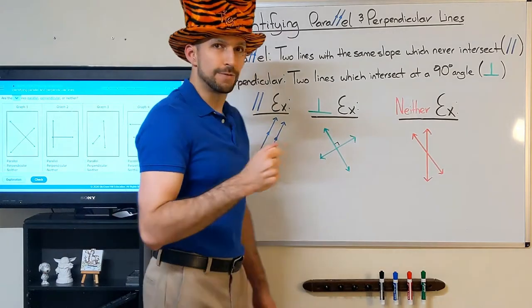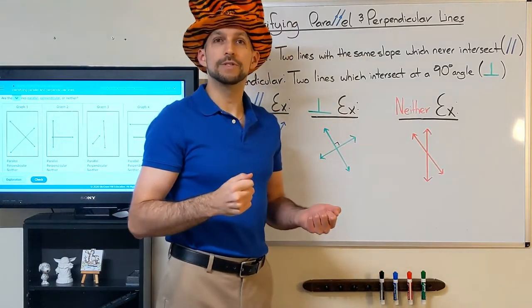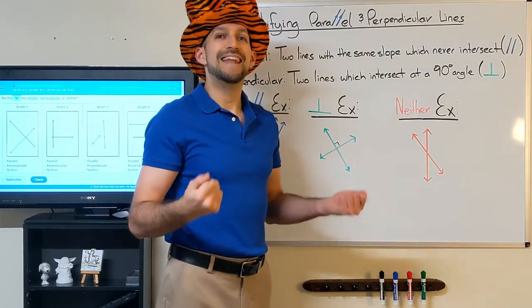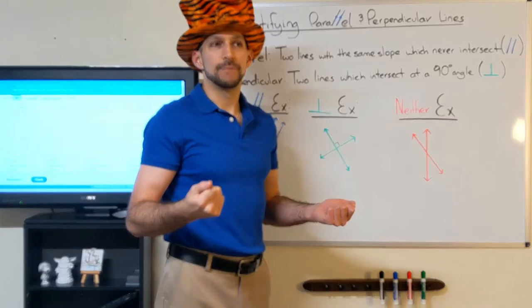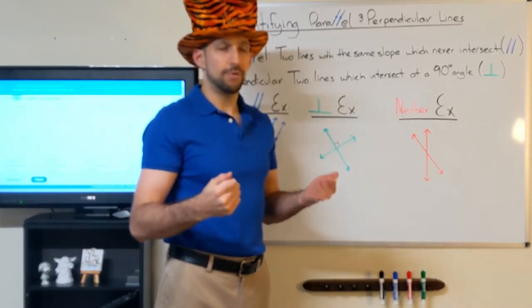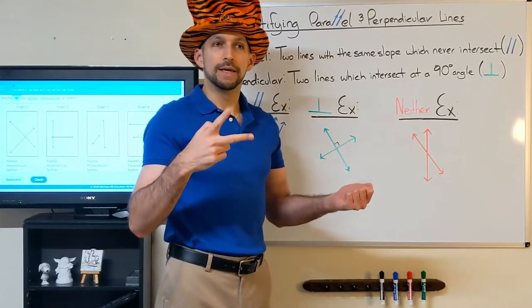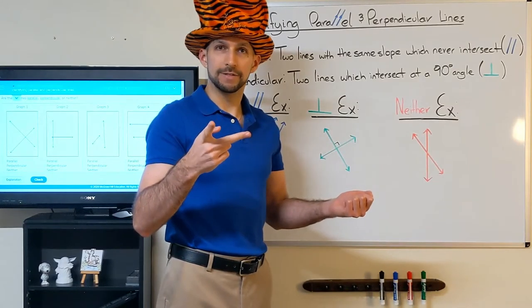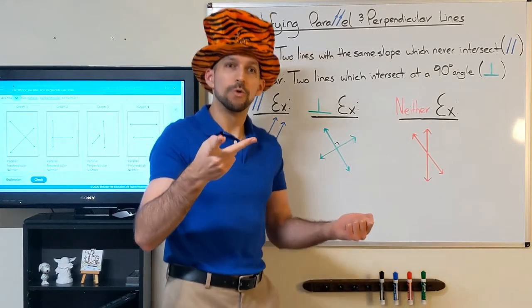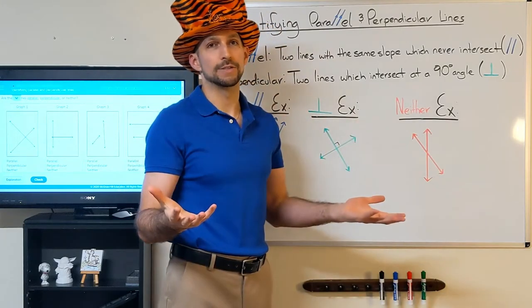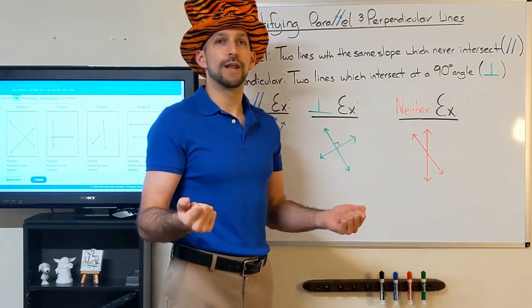So if we were to see an equation for two perpendicular lines, we'd notice that their slopes are negative inverses of each other. In other words, one would have a negative symbol, one would not. And the fractions, effectively, if they had slopes in terms of fractions, would be flipped upside down. For example, if one had a slope of two, one would have a slope of negative one half.